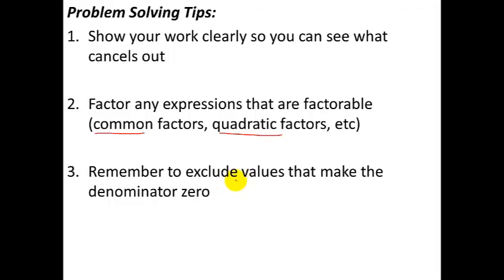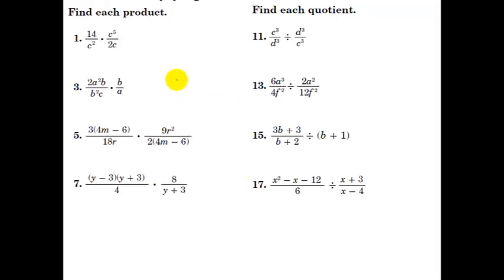So for now, anything that makes the denominator zero, you're going to just write down as an excluded value. Alright, let's jump into some examples. So here we go, find each product. Now the first thing you could do is multiply across 14c to the fifth in the numerator, and then 2 times c squared times c would be 2c cubed in the bottom.